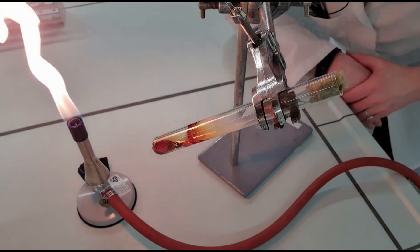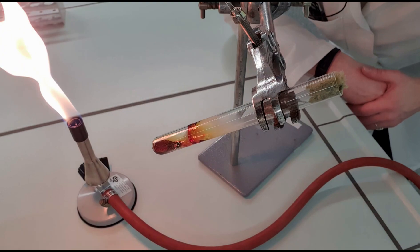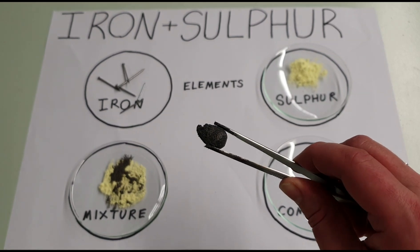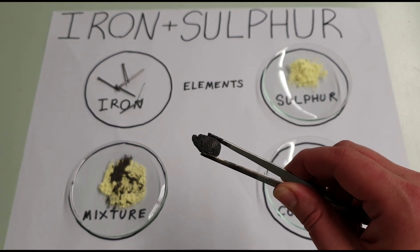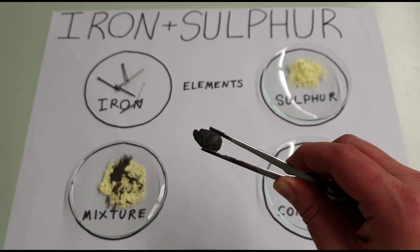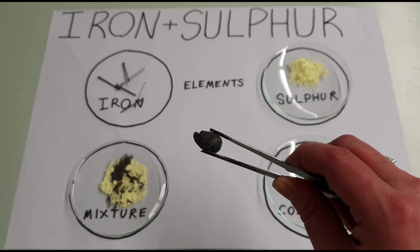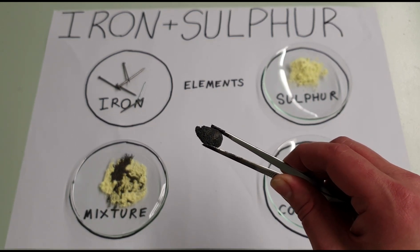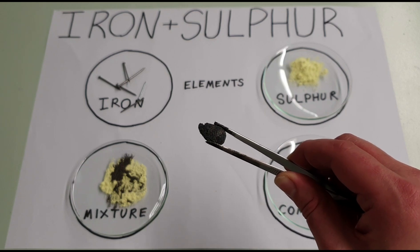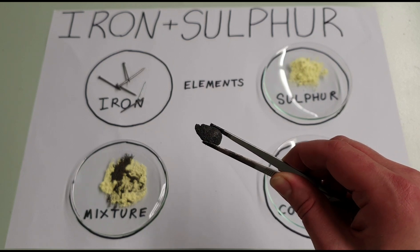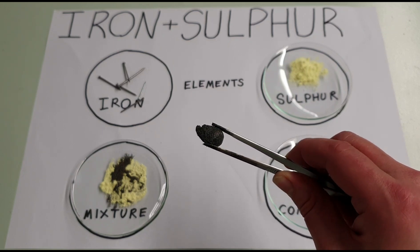Now I need to be able to get it out of the glass so you can see the appearance of this newly made compound. I broke open the test tube and the iron sulfide compound came out. As you can see it's a dull grey material — not shiny like the iron, not yellow like the sulfur — because now a new material has been made and so there are new properties.